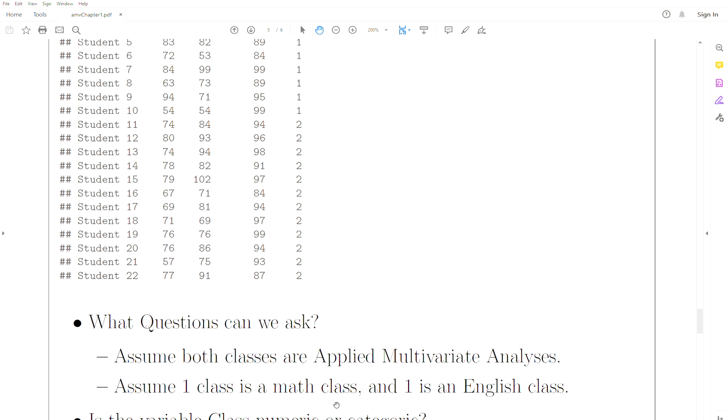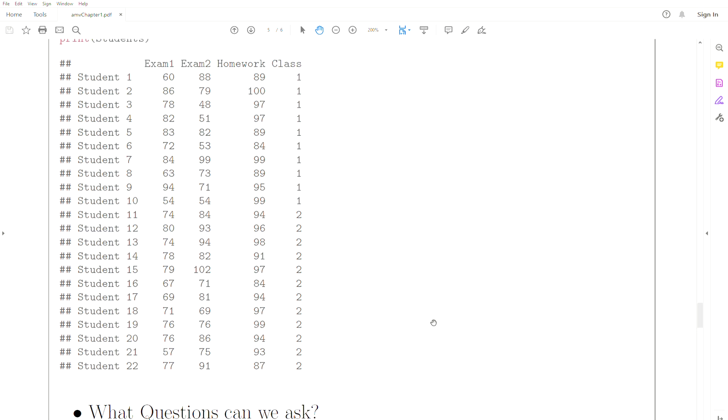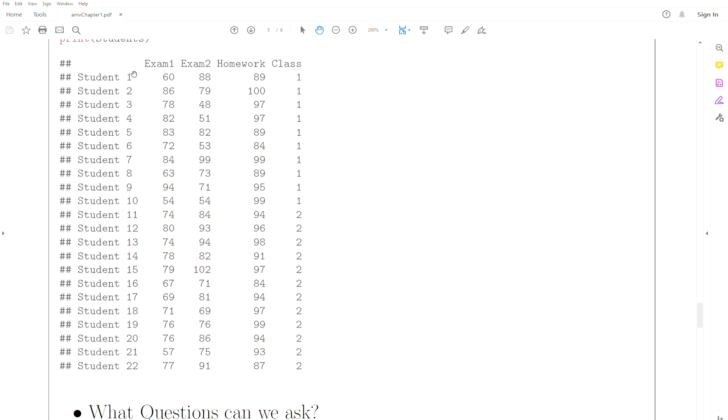Now if they're different classes - say one's a math class, one's an English class - and assume that student one is the same as student eleven, so each student takes both classes.